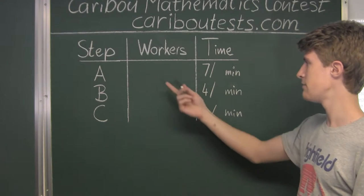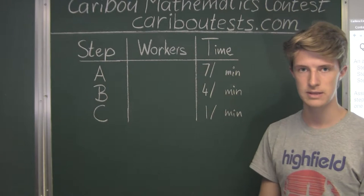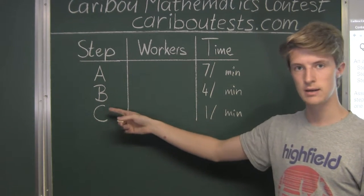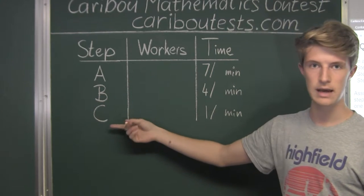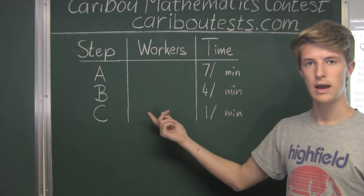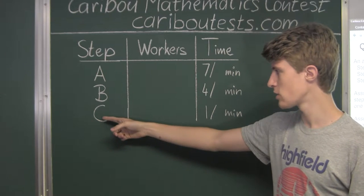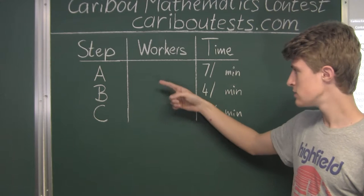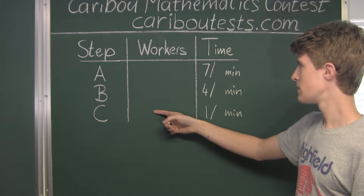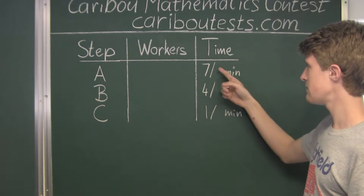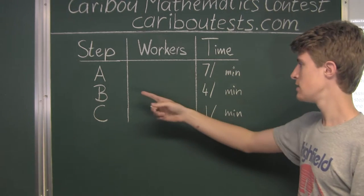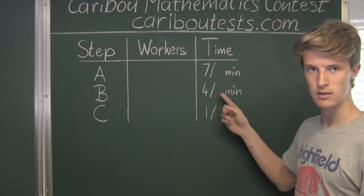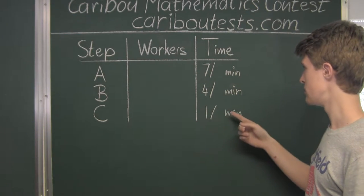Now let's see what would happen with three workers for step A. We'd have three workers left to distribute, and both B and C need at least one worker. We wouldn't put two workers on C instead of B because B takes longer. So we'd have three, two, and one. For A: 7/3 minutes, which is just over 2 minutes. For B: 4/2 = 2 minutes exactly. For C: 1/1 = 1 minute. The maximum time for any one step would be the 7/3 minutes for step A.